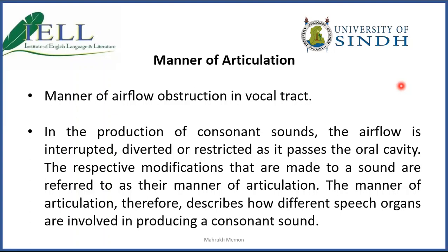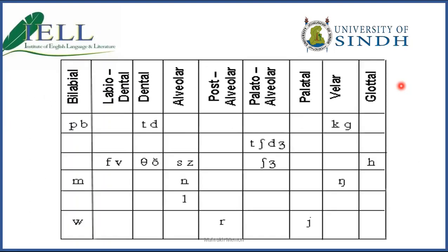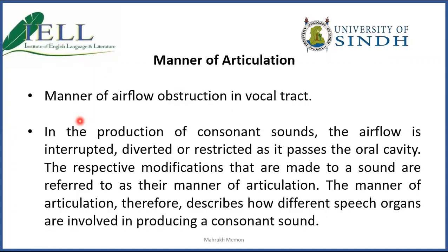Previously we talked about the places of articulation and this chart where we discussed consonants and at what places they were produced. Now we are moving forward to discuss manner of articulation, through which we will see how air is obstructed in our vocal tract. Previously we were saying where; now we are saying how. The first question for distinguishing one consonant from another is the place of articulation, and the second is manner of articulation — how the airflow is obstructed in the vocal tract.